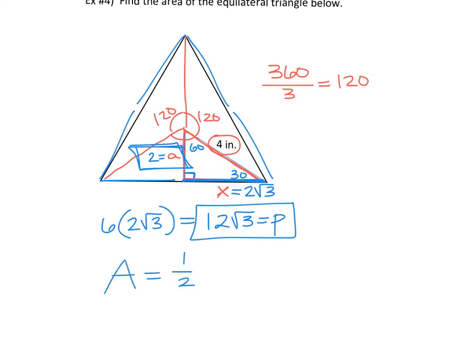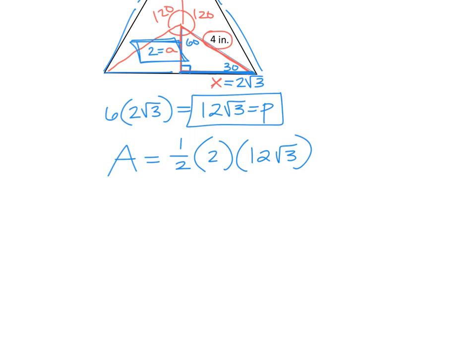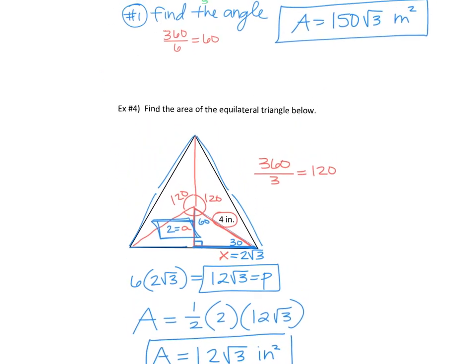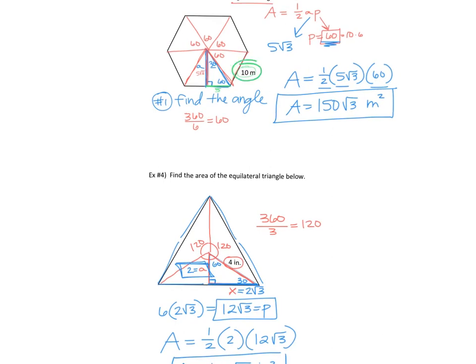So now I know my apothem and I know my perimeter and that's all I need to be able to solve this. Area equals one half times the apothem, which is two, times the perimeter, which is 12 rad three. And then we multiply that. Half of two is one. One times 12 is 12. So 12 rad three. How do you label it? Inches squared would be our area. Any questions on that? Just notice it's different what they gave us. In this first one, they gave us a side of the figure so you can find the perimeter pretty easily. This one, they gave us a radius. So it was easier to find the apothem, but then you can find the perimeter using the apothem.